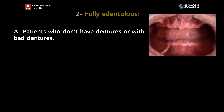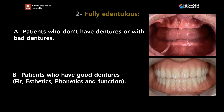I would like to divide fully edentulous cases into two different sections. Number one would be patients who don't have dentures or with bad dentures. And number two, we have patients who do have good dentures — meaning they fit well, the aesthetics are good, phonetics, and they function really well. These are the two different categories for fully edentulous cases, and let's see how we manage each one.